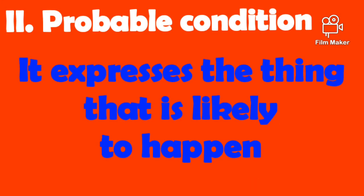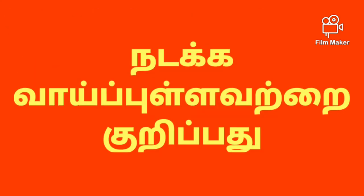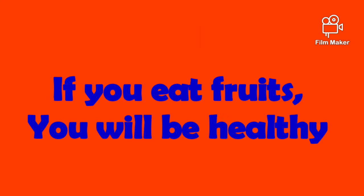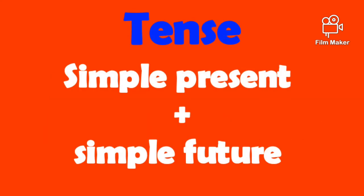Let's move on to the second one — probable condition. It expresses the thing that is likely to happen. The tense formation is simple present plus simple future. We will see one example. If you eat fruits, you will be healthy. Here, the tense formation is simple present plus simple future.